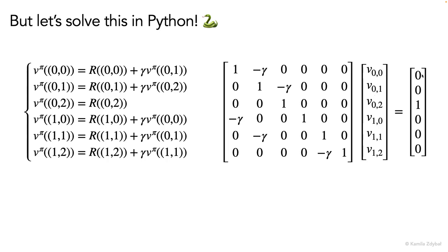And that's equal to zero. The only non-zero entry in this right-hand side vector is the one where the agent receives the plus one reward. So these are the Bellman equations in matrix form, and now we can use our favorite linear algebra solver to solve for these unknown value functions.